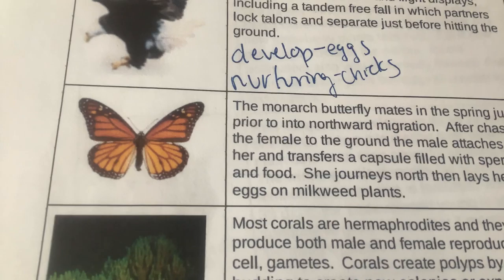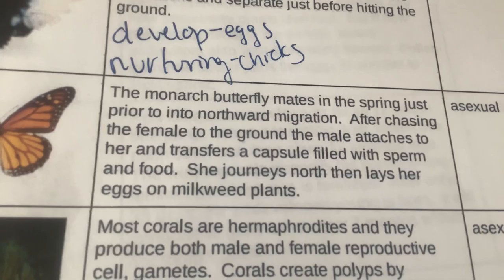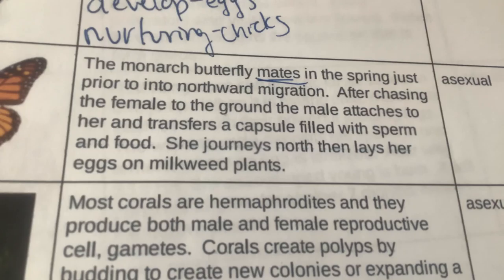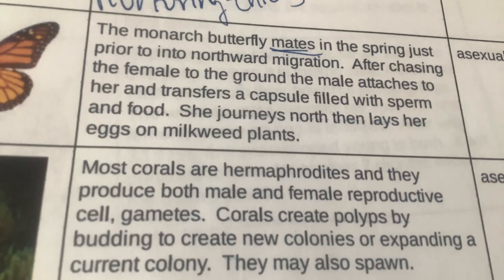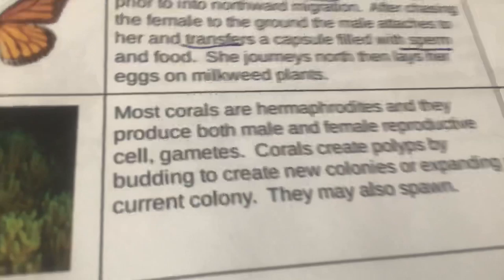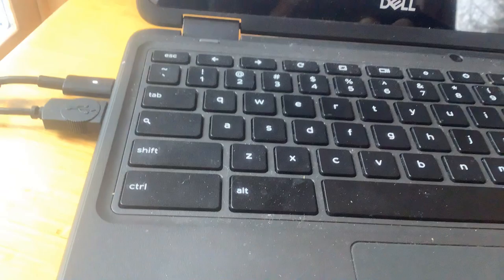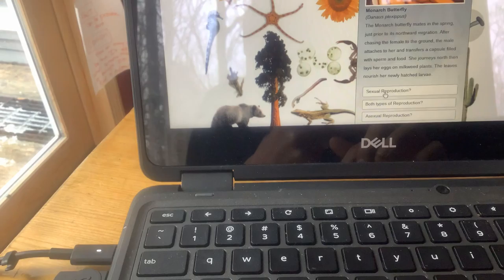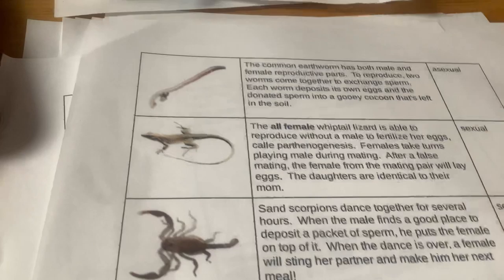Moving on to the monarch butterfly. With monarch butterflies, you see those often in the springtime — they go through a migratory pattern, they are orange in color. The monarch butterflies mate in the spring, just prior to the northward migration. After chasing the female to the ground, the male attaches to her and transfers a capsule with sperm. She journeys north and lays her eggs on milkweed plants. So there's sperm, there's eggs, there's mating — all of that means it is sexual reproduction. Clicking on the monarch butterfly on our site confirms it is correct — it's green, so that is good.